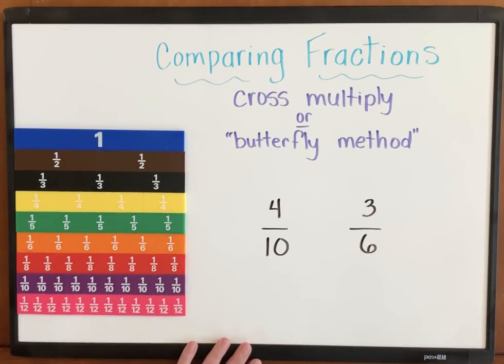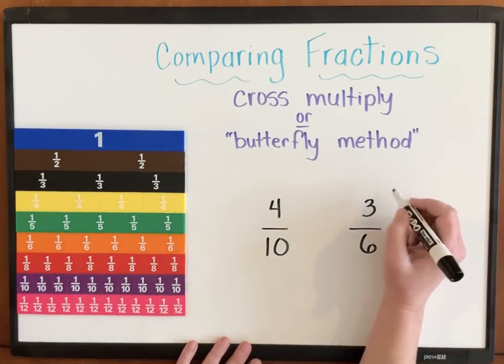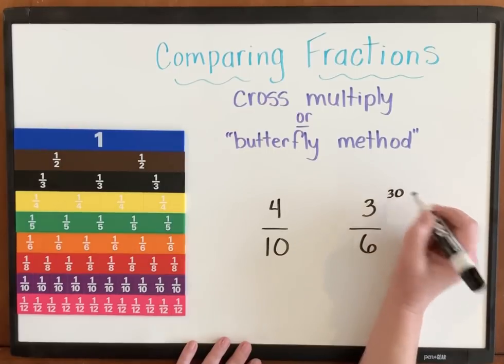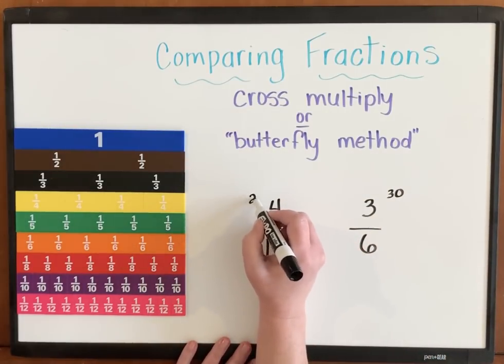I want to cross multiply, so I'm going to multiply my denominator times my numerator. 10 times 3. That would be 30. 6 times 4. That would be 24.